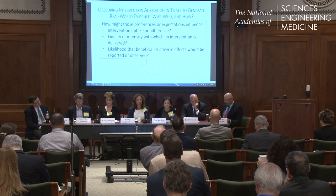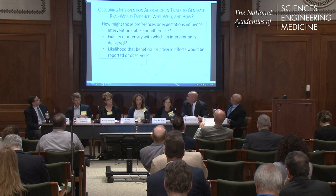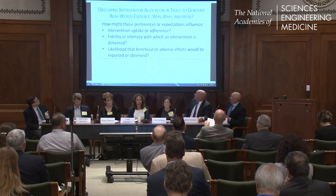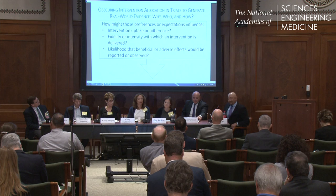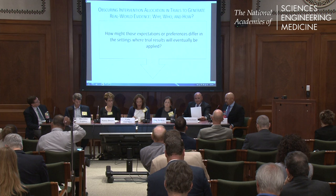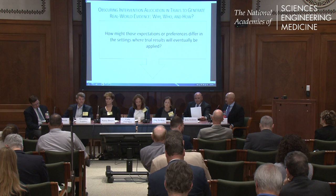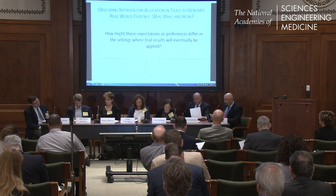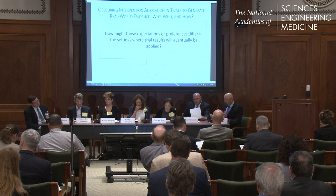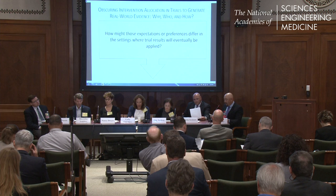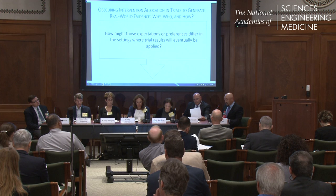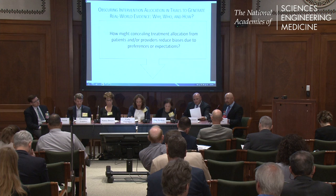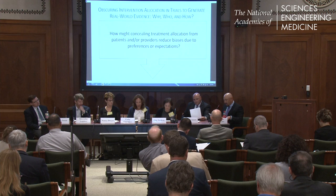Moving through the decision aid: how much would the effectiveness or safety of the study treatment vary among providers or care settings? What expectations or preferences are providers and patients expected to have regarding benefits and adverse effects of the study interventions? How might those preferences or expectations influence intervention uptake or adherence, fidelity or intensity with which an intervention is delivered, and the likelihood that beneficial or adverse effects would be reported or observed? How might those expectations or preferences differ in the settings where trial results will eventually be applied? And how might concealing treatment allocation from patients and/or providers reduce biases due to preferences or expectations?